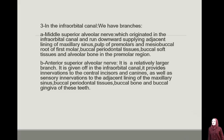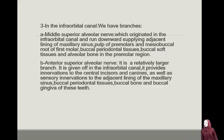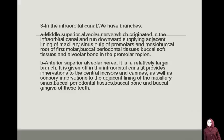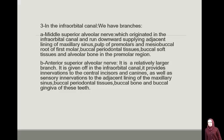Three, in the infraorbital canal, we have: A) Middle superior alveolar nerve, which originates in the infraorbital canal and runs forward supplying adjacent lining of the maxillary sinus, pulp of the premolars, and the mesiobuccal root of the first molar. Buccal periodontal tissues and buccal soft tissues are also supplied in the premolar region.